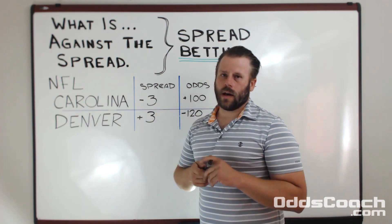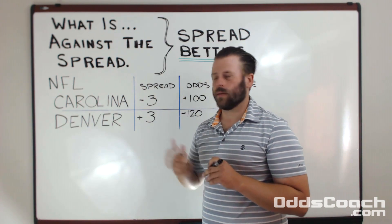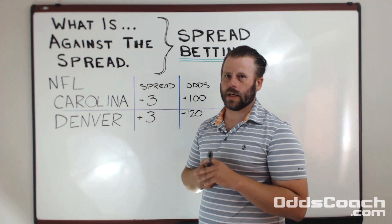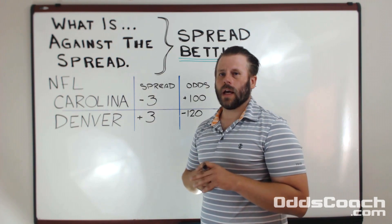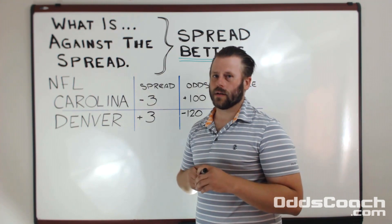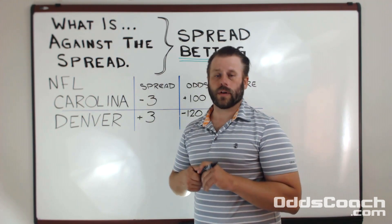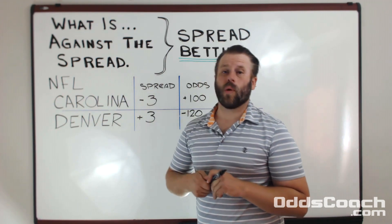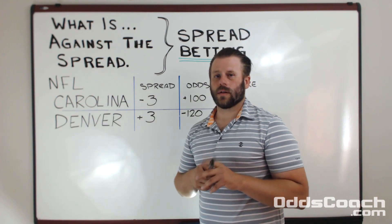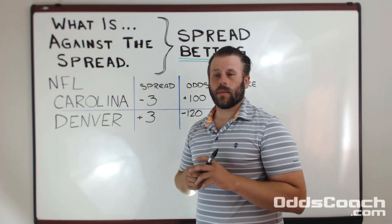What that means is that when you have the final score of the game you're going to have to subtract three points from Carolina and then reevaluate the score to determine whether Carolina has won. Or likewise, if you've taken Denver, you're going to add three points to Denver's score at the end of the game and determine whether or not Denver has beaten Carolina.